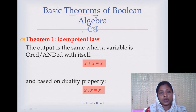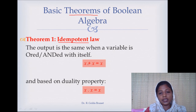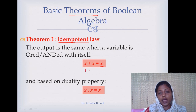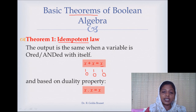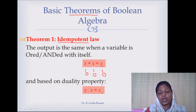Now we will discuss the theorems of Boolean algebra. The first theorem is the idempotent law, which is very useful in simplification. If we have x OR x, the result is going to be x. That is, when we have expressions with many duplicates, we can remove all the duplicates and keep only one. So if x is 1, then 1 OR 1 = 1, which is x; if x is 0, then 0 OR 0 = 0. So x OR x = x. Applying duality, we also have x AND x = x, since 1 AND 1 = 1 and 0 AND 0 = 0.